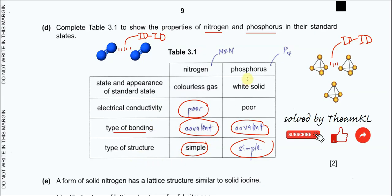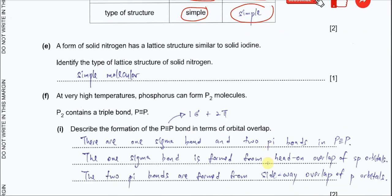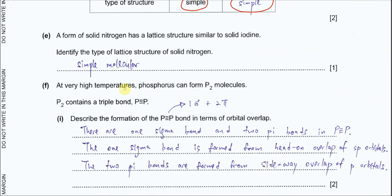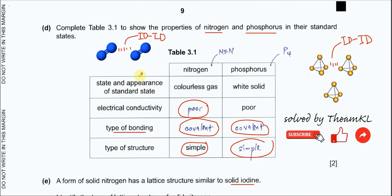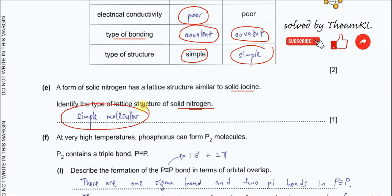You must put covalent bond for the type of bonding, and the type of structure for phosphorus must be simple molecular, not giant. Part E: A form of solid nitrogen has a lattice structure similar to solid iodine. Identify the type of lattice structure of solid nitrogen. Solid nitrogen must be simple molecular because nitrogen is N2. When it forms a solid, it is a simple molecular structure with no covalent networks.